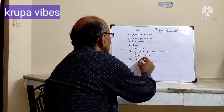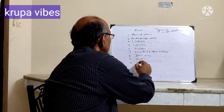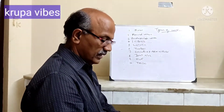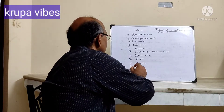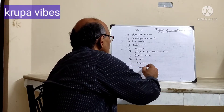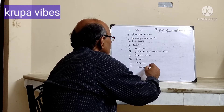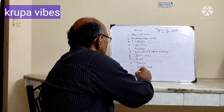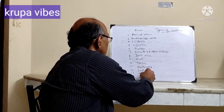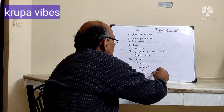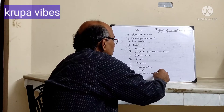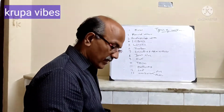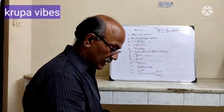Then we have HUF, trust, association, society and club, partnership, limited liability partnership, and then limited company — which includes private limited company and public limited company. These are the types of accounts we have in the banking system.